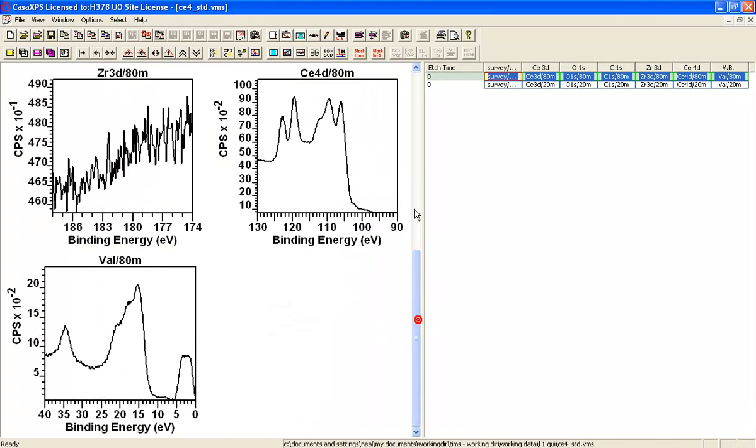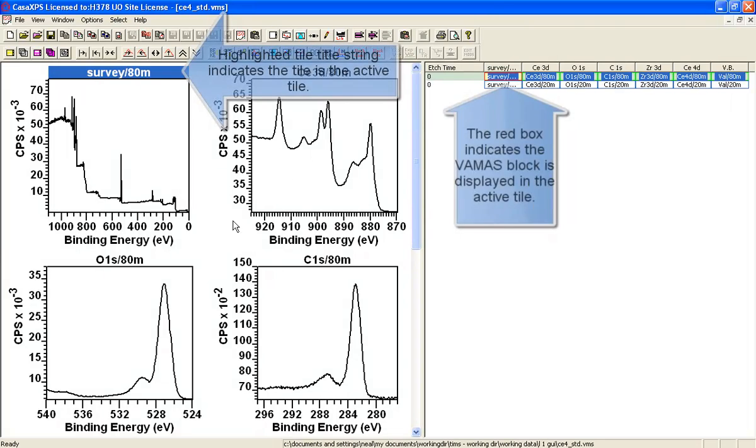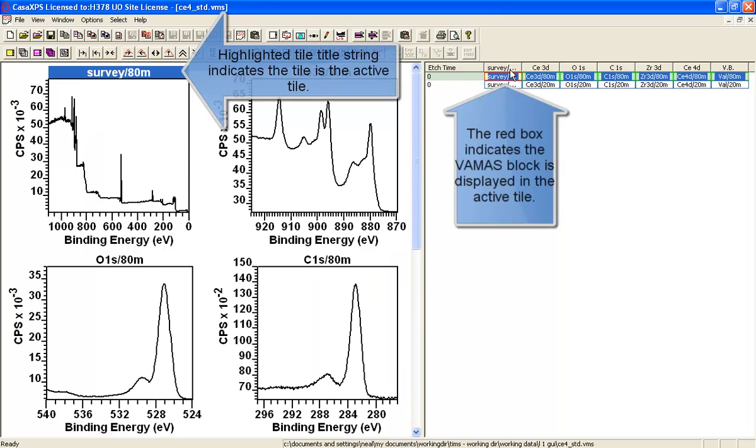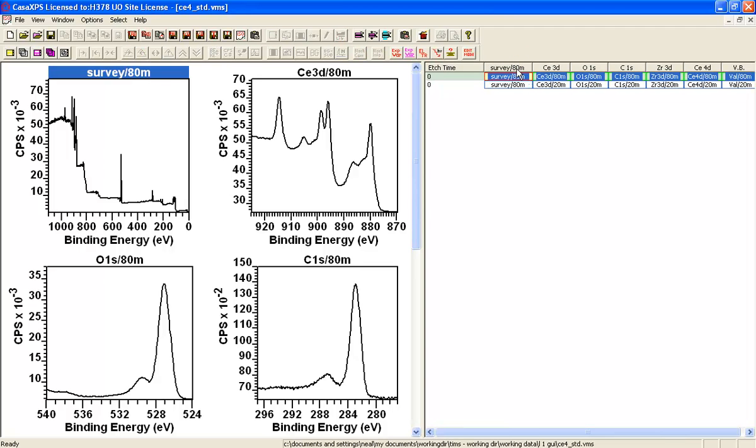We can now see that there is a blue bar associated with one of these tiles. This blue bar corresponds to the red border that surrounds the survey spectrum. As you can see, the survey/ATM corresponds to the survey/ATM here.